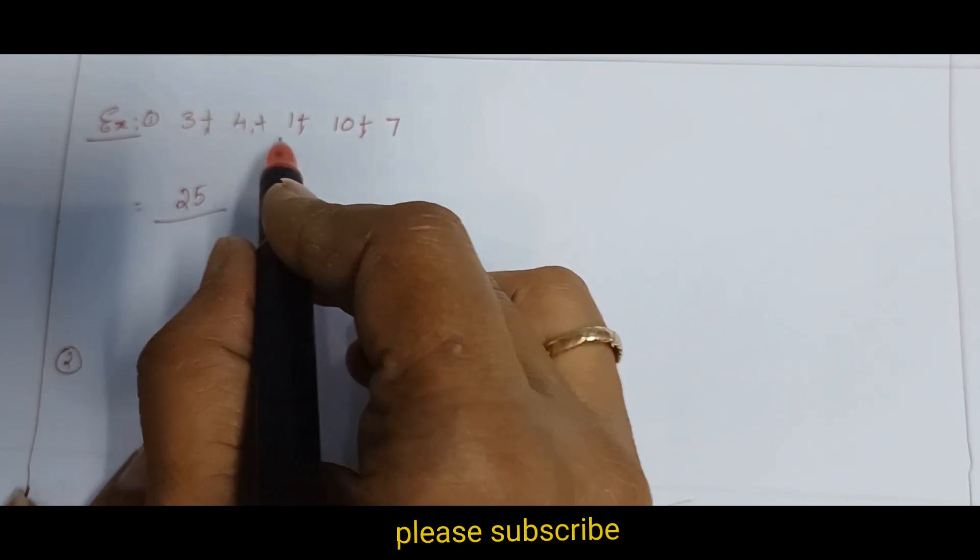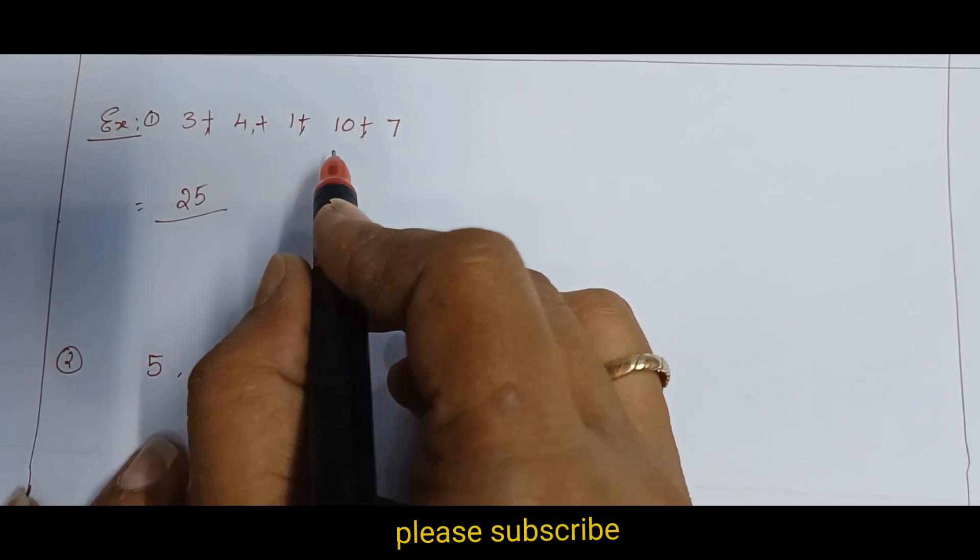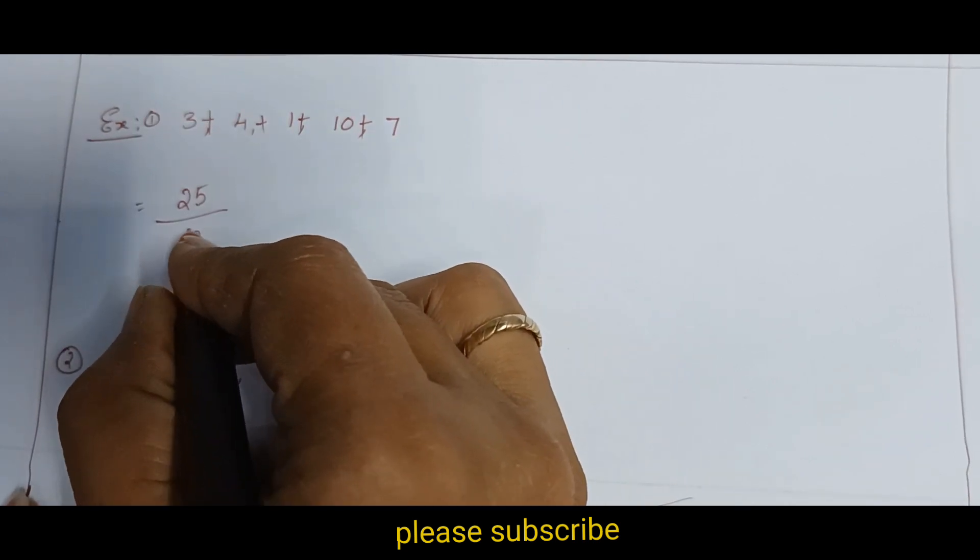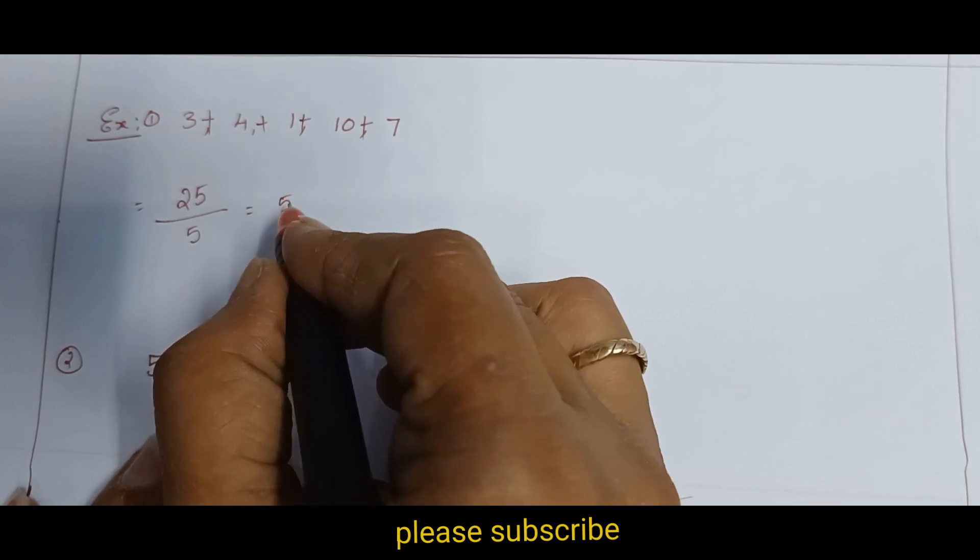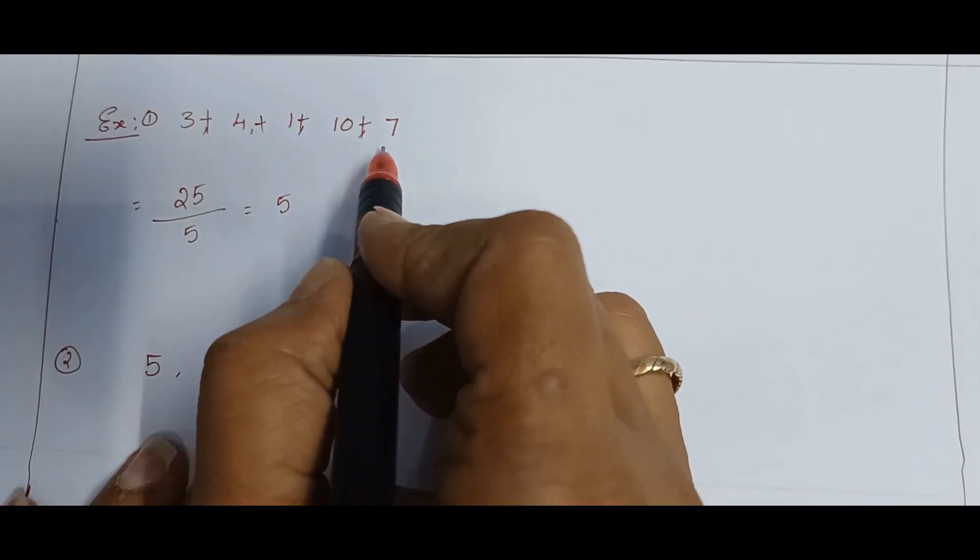Then, number of numbers, 1, 2, 3, 4, 5. Okay, so there are 5 numbers. So, 25 by 5, which is 5. 5 is mean of all these given numbers.